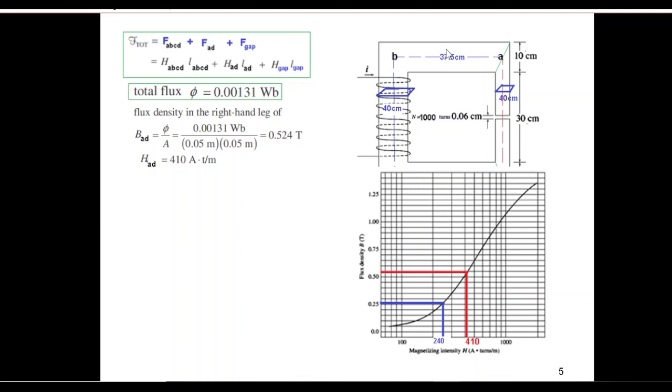Similarly for all these three arms, B_ABCD, the flux remains the same divided by the area. Area here is different: width is 10 and the depth is 5. Converting into meters and dividing, we get this to be the flux density. Plugging in here we can find the H or intensity to be 240. So H_ABCD is 240 ampere turns per meter.